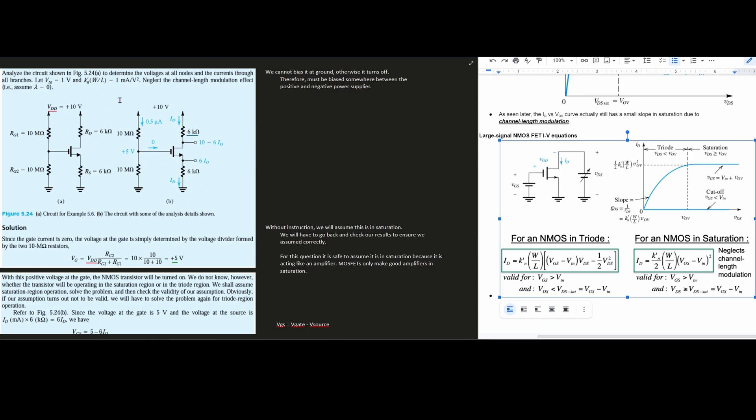So part a is we're going to determine the voltages at all nodes and the currents through all branches. We're going to let our VTN equal to 1 volt and the k prime n W over L, which is our kn, equal to 1 milliamp over V squared. Now we are to neglect the channel length modulation effect, so that means lambda equals 0.